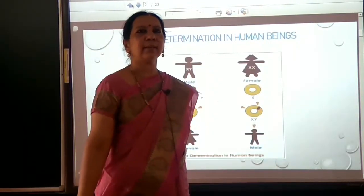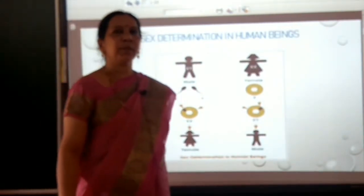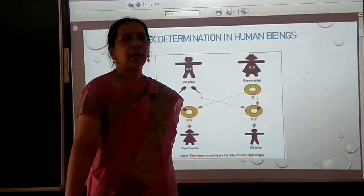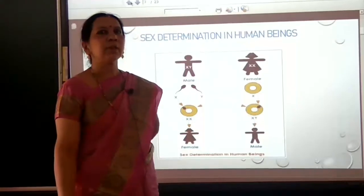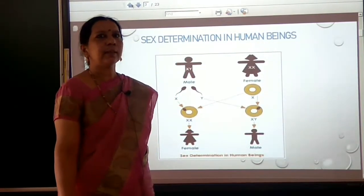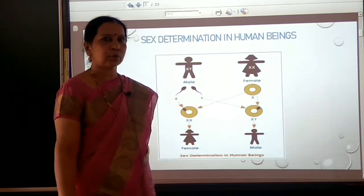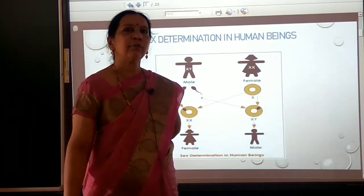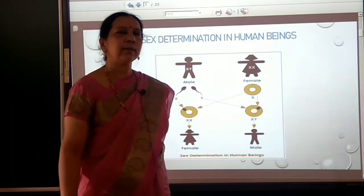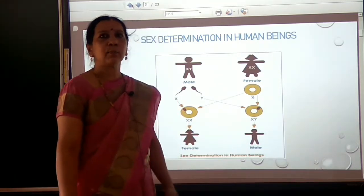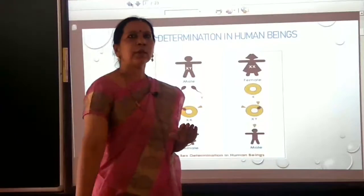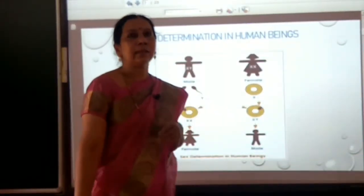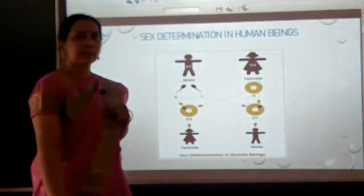Hello children, welcome back to 10th standard biology class. In the last class we were discussing about sex determination in human beings. As already discussed, in some animals like reptiles, sex determination relies entirely on environmental cues — the temperature at which fertilized eggs are kept decides whether the animal is male or female. Some animals like snails change sex. So here sex is not determined genetically, but in human beings sex is determined genetically.